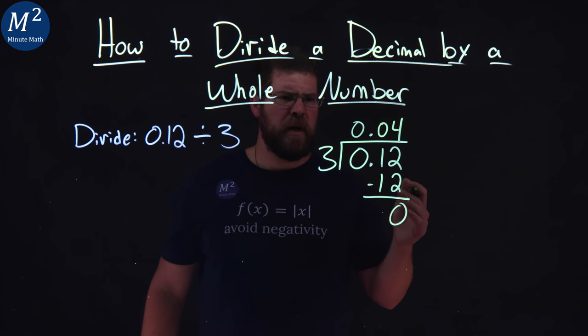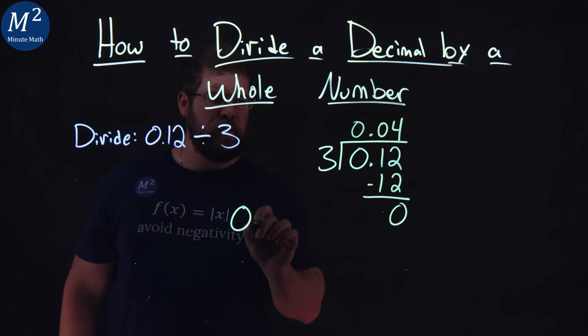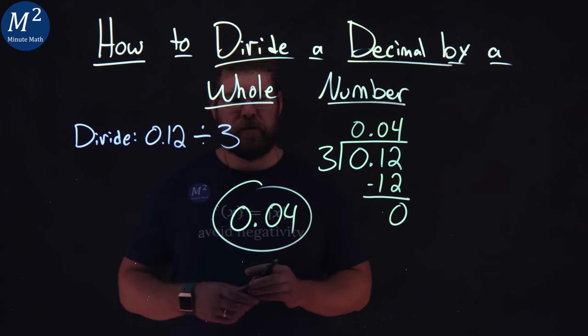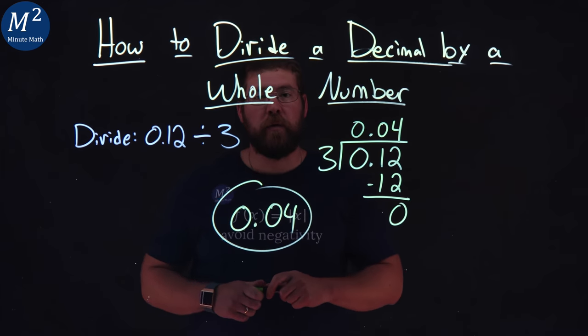No remainder, and we're actually kind of done here. 0.04 is our answer, and we take 0.12 divided by 3.